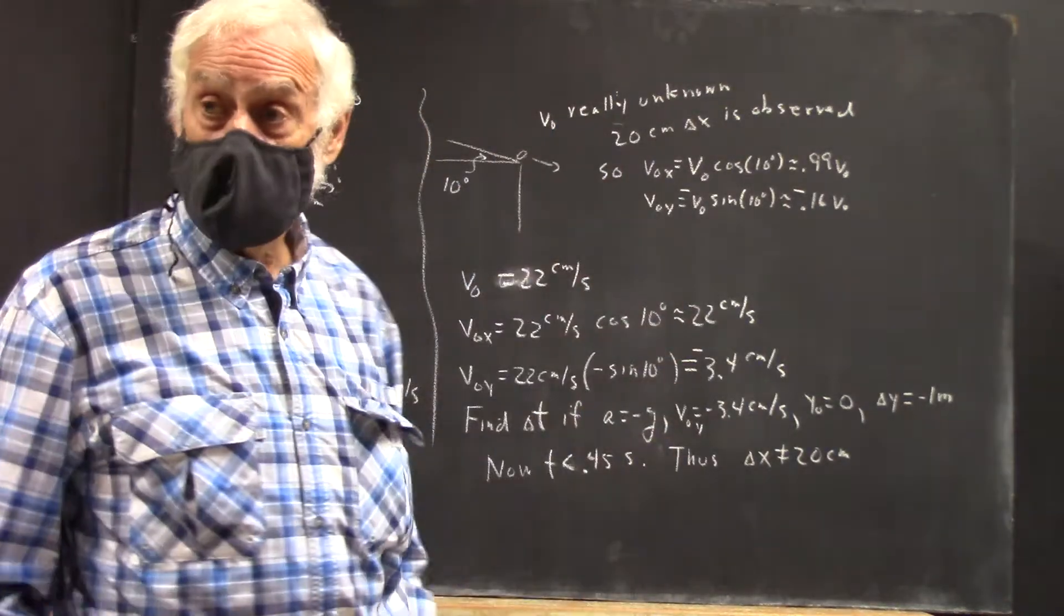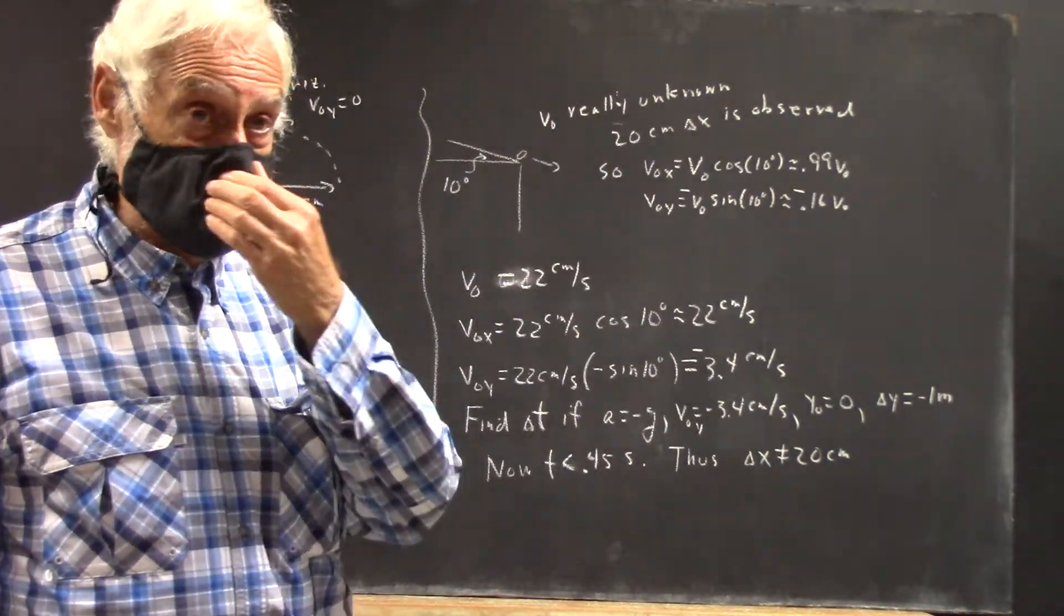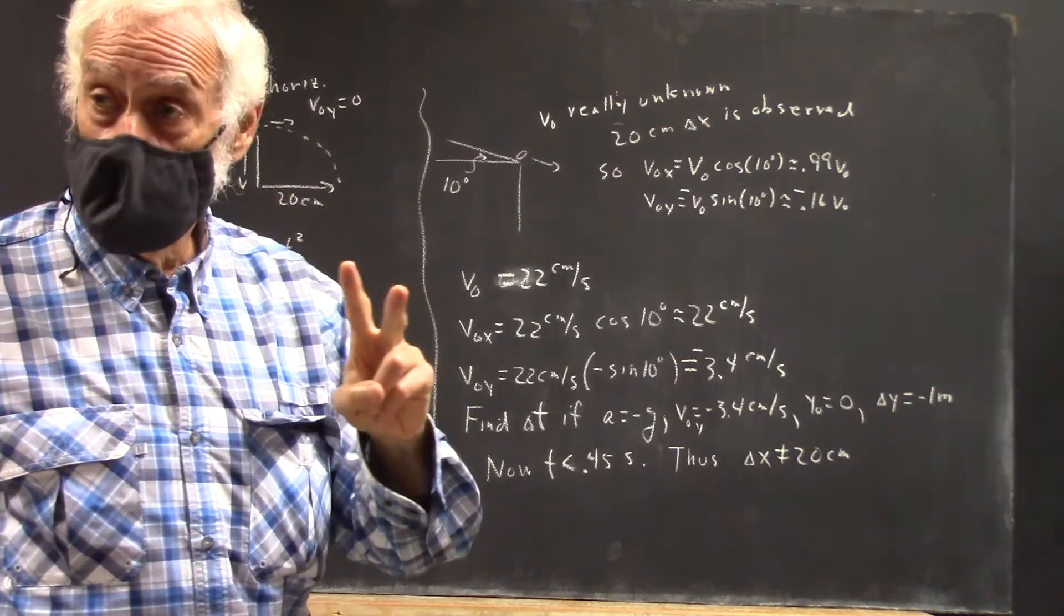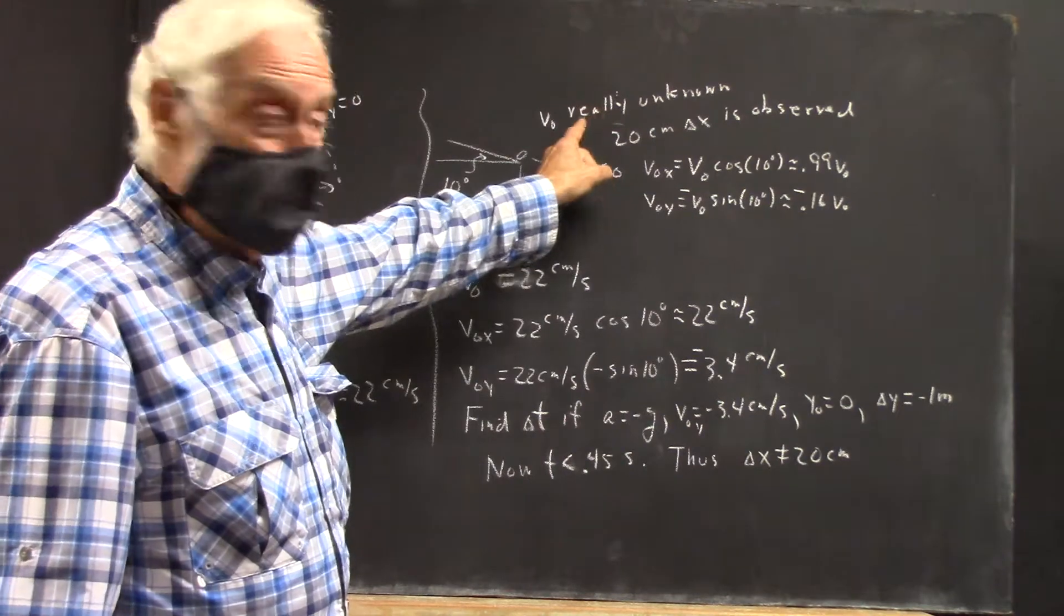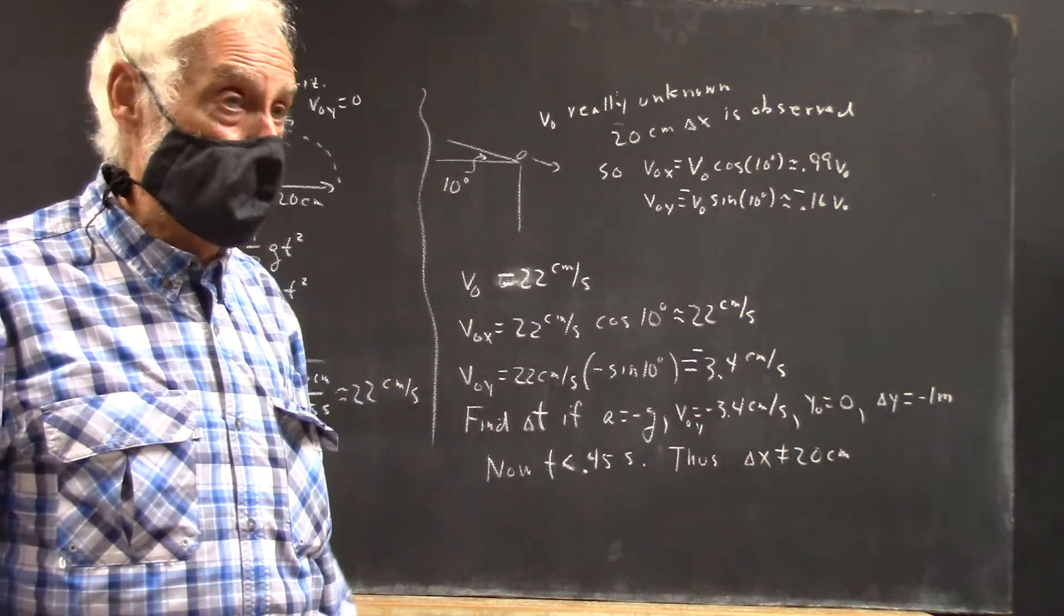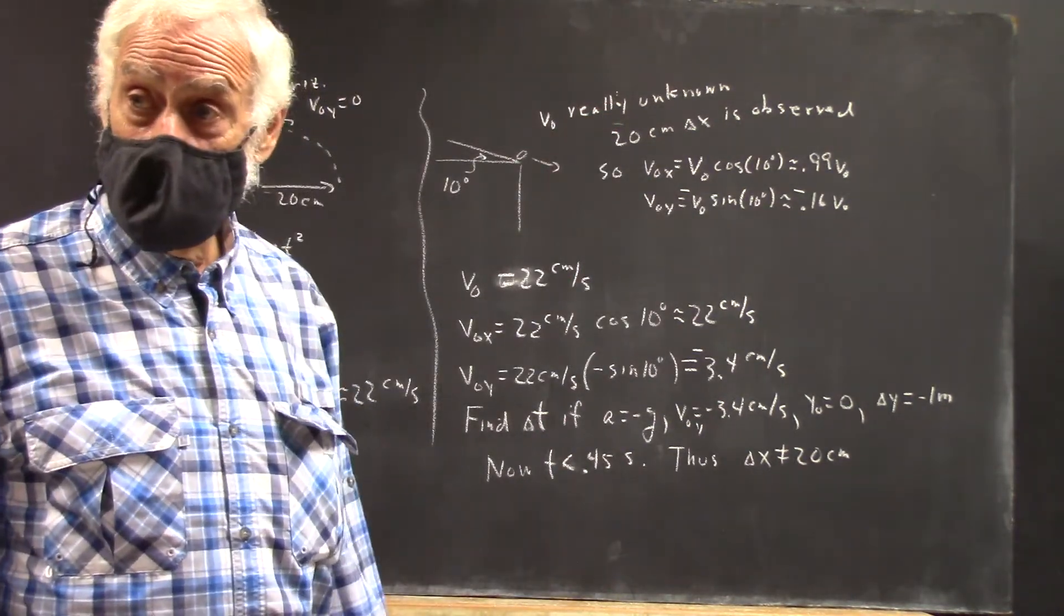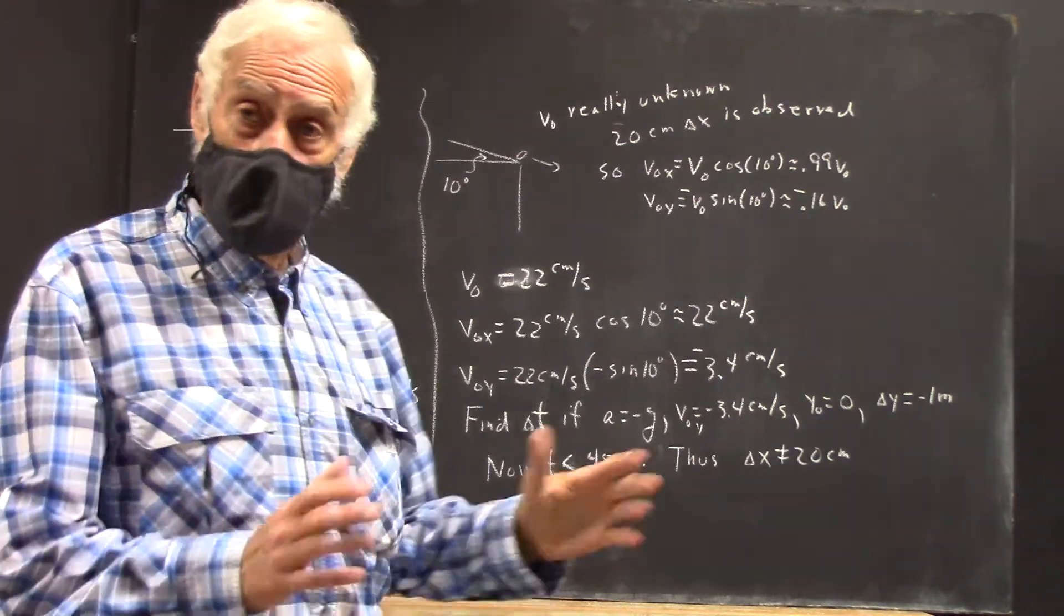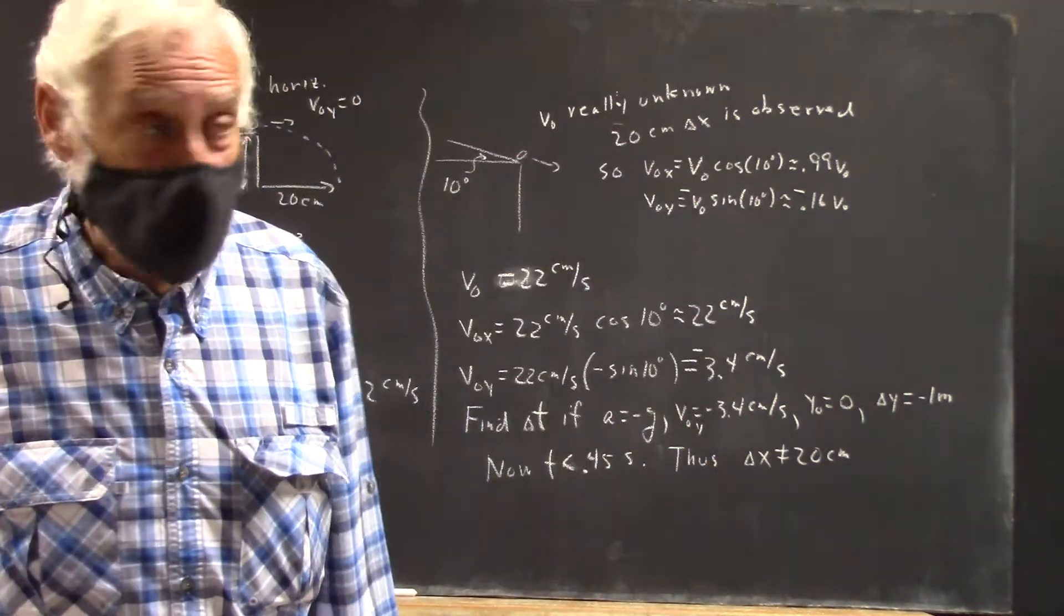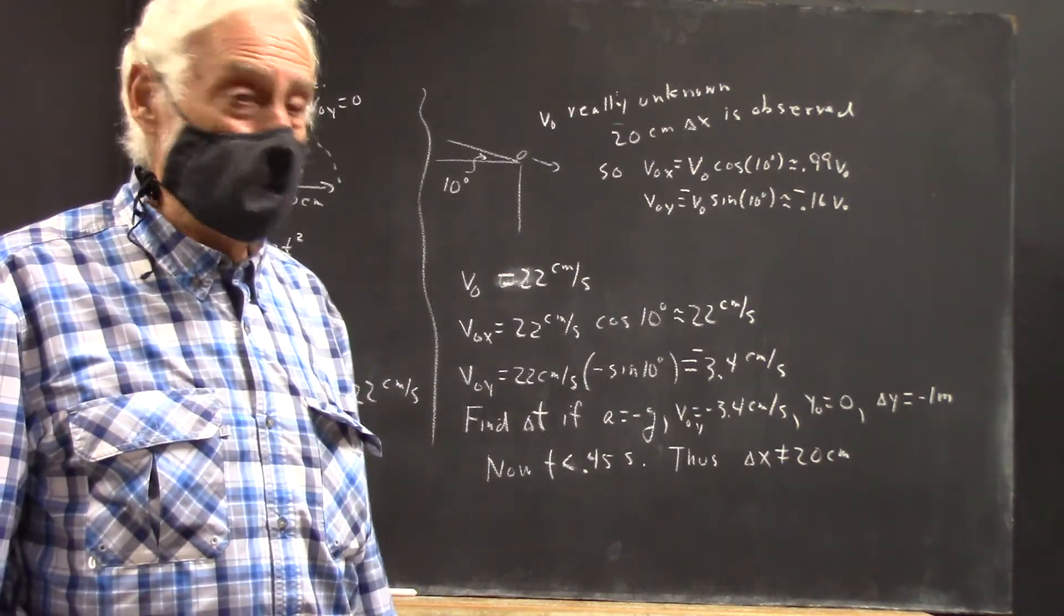Now you set up your projectile motion. You have only two unknowns. One of them is V0, and the other is your delta t. So you're going to get two simultaneous equations for V0 and delta t. You're going to be a little messy.